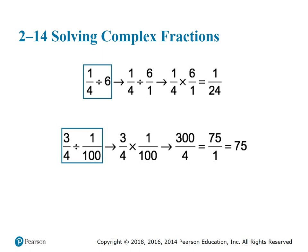For the second example, three-fourths divided by one-hundredth: take the reciprocal of one-hundredth — change the sign to multiplication — and rewrite as three-fourths times one-hundred over one. Multiply to get three-hundred over four. Three-hundred can be divided by four exactly seventy-five times, giving a final answer of 75.